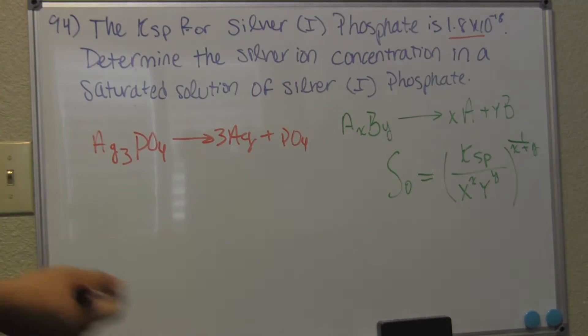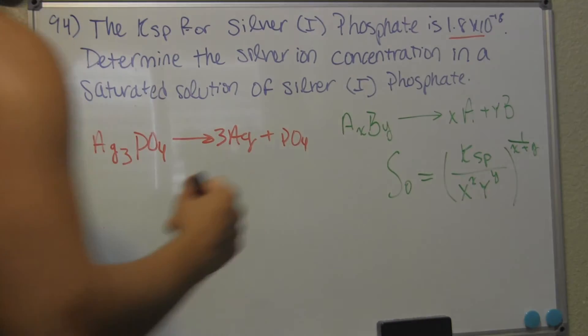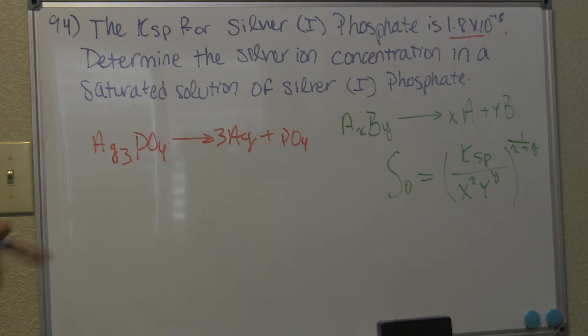And this Y, which is going to be the coefficient of B on the product side raised to the subscript of B on the reactant side. All right. So we're going to be using these values to plug into our reaction, our equation.